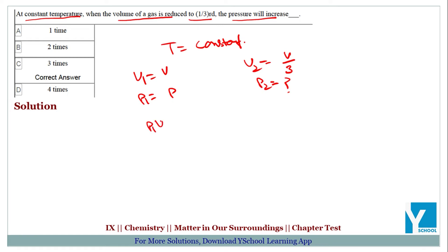So, this equation use hoti hai. P1V1 equal to P2V2. Okay, now we have the question. P1V1 equal to P2V2.